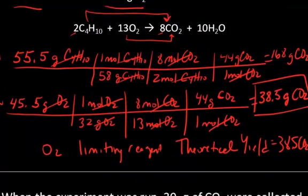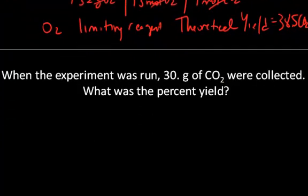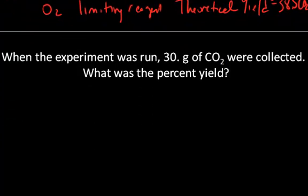The actual yield, I would have to go into the lab and do the experiment. When I actually did the experiment, I ended up with 30 grams of carbon dioxide. The question is, why only 30 if they theoretically said I should get 38.5? Well, lots of things can happen.